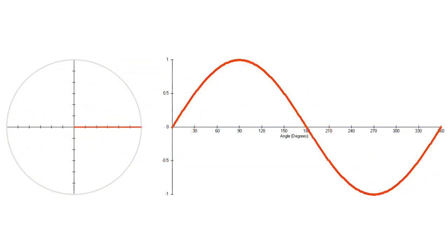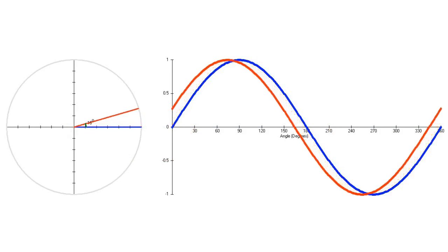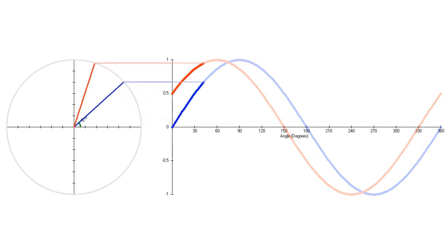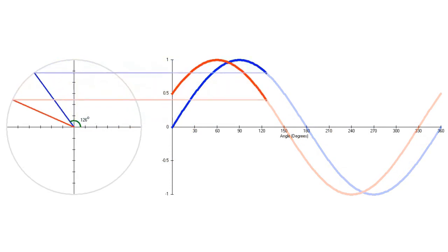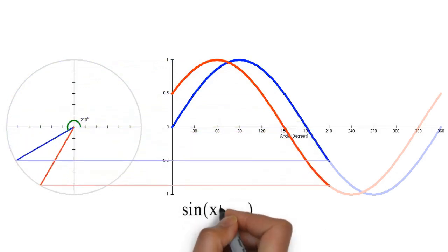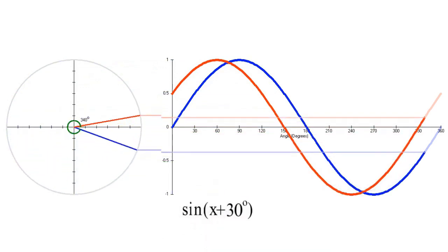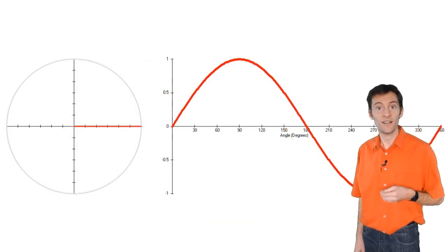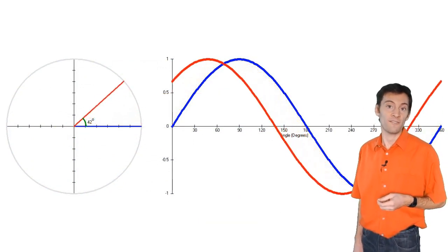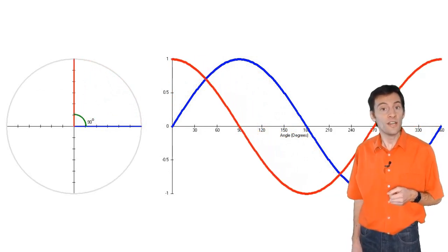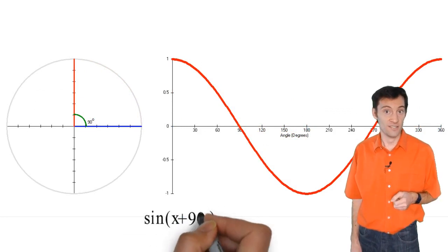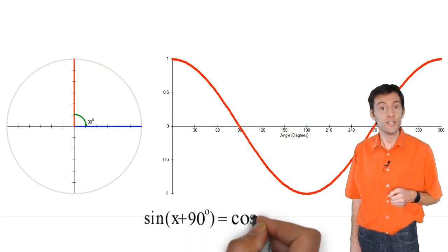What about if we shift the red wave the other way, so that the red wave now leads the blue by 30 degrees? Not surprisingly, the red wave's equation now becomes sine x plus 30 degrees. Now it just so happens that if we shift the sine wave by 90 degrees, we get a wave that can be described by another trigonometric function — the cosine function. So sine x plus 90 degrees is equal to cosine of x.